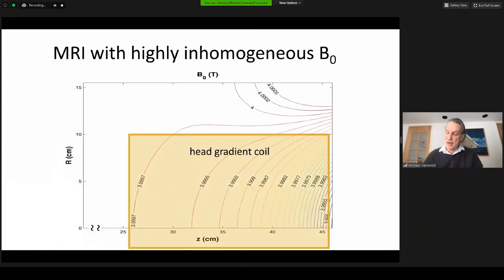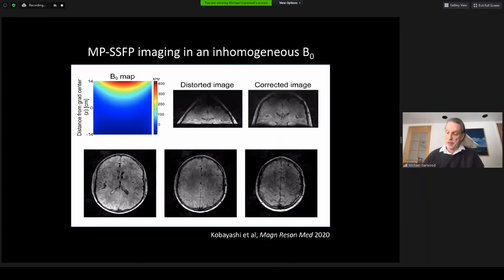In fact, the head gradient was positioned 36 centimeters away from the isocenter of our 4-Tesla magnet as shown here, and we performed imaging with it. Here you can see examples of the images that were acquired. The image labeled distorted image is the raw image with no post-processing, and to the right of that is the corrected image obtained by including in the post-processing steps information about the magnetic field non-uniformity that was mapped, which is shown in the upper left.